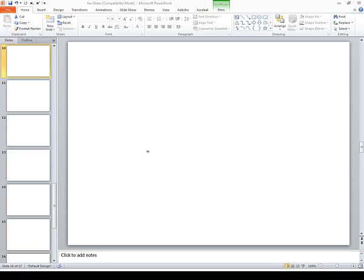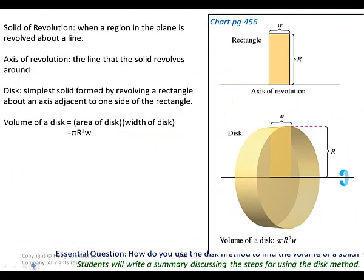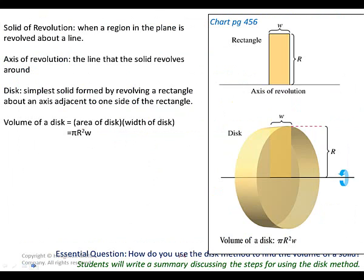These are what we call solids of revolution. Think about parts of cars, funnels, discs, bottles — all kinds of shapes we build using rotation. You can envision lots of different 3D shapes this way.